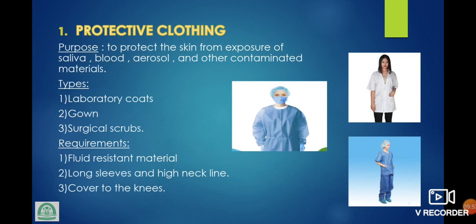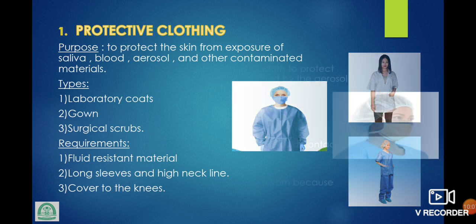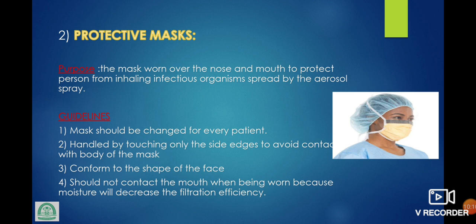Protective clothing — purpose: to protect the skin from exposure to saliva, blood, aerosol, and other contaminated material. Types: laboratory coat, gown, scrub. Requirements: fluid-resistant material, long sleeve and high neckline, covered to the knees. Protective mask — purpose: the mask worn over the nose and mouth to protect a person from inhaling infectious organisms spread by aerosol spray. Guideline: mask should be changed for every patient; handle by touching only the side edges to avoid contact with the body of the mask; conform to the shape of the face; should not contact the mouth when being worn because moisture will decrease the filtration efficiency.